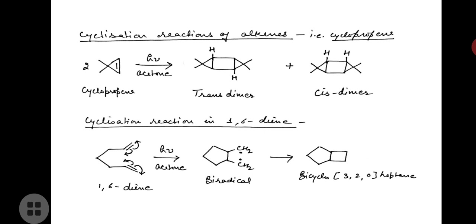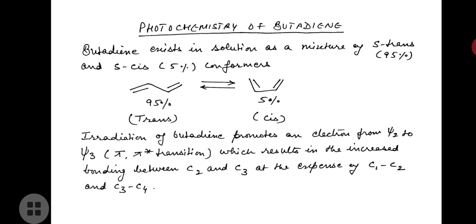Now let us study the photochemistry of butadiene. Butadiene exists in solution as a mixture of s-trans (95%) and s-cis (5%) conformers. Irradiation of butadiene promotes an electron from ψ2 to ψ3 — a π→π* transition — which results in increased bonding between C2 and C3 at the expense of C1–C2 and C3–C4 bonds. The lowest excited states of s-trans and s-cis butadiene exhibit larger barriers to rotation about the C2–C3 bond due to its double bond character in the excited state, so conformational character is retained.